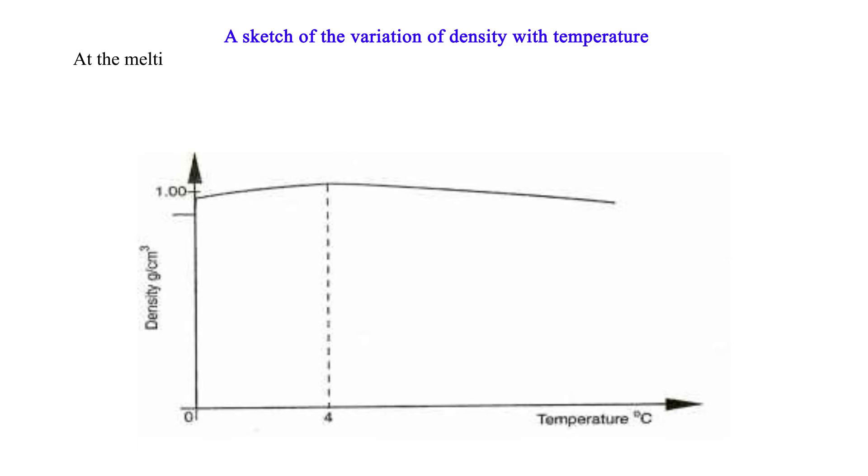A sketch of the variation of density with temperature: at the melting point of water, 0 degrees Celsius, there is a drastic increase in volume, resulting in a large decrease in density as the ice forms.